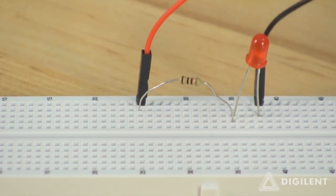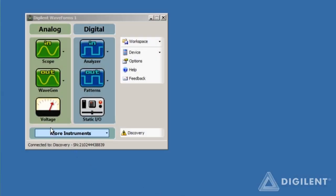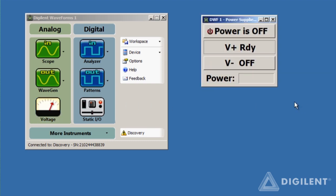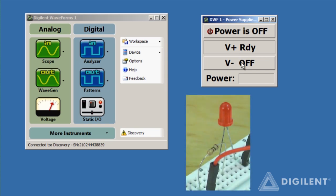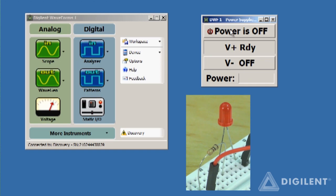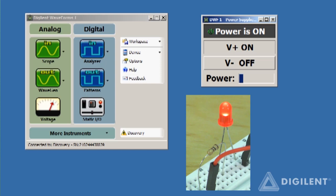Now all we need to do is use the waveform software to turn on power to the circuit. To open the voltage instrument, simply click on the voltage icon on the waveform's main window. To turn on V plus, click on the V plus button so that it's indicated as ready. Disable the V minus button so that it's indicated as being off. Clicking the master power button now turns on V plus, power is applied to the circuit and the LED lights up.